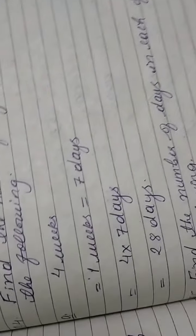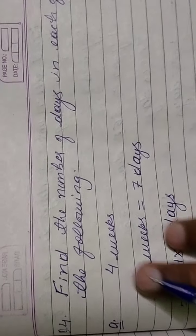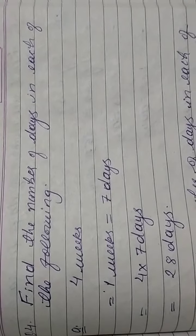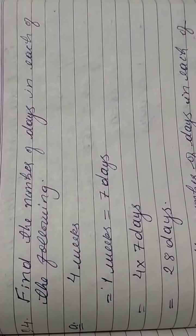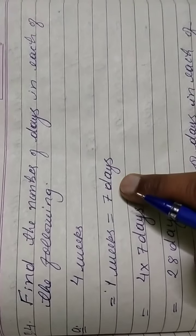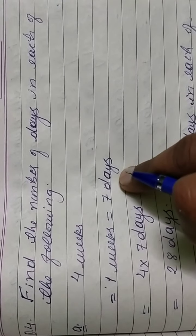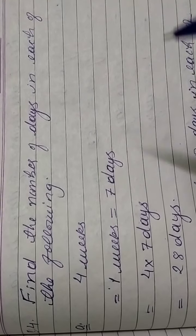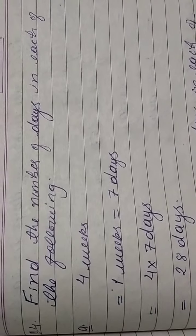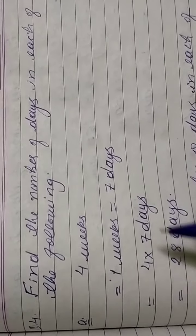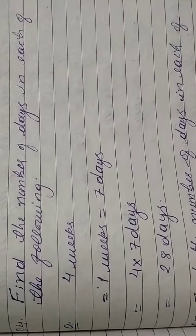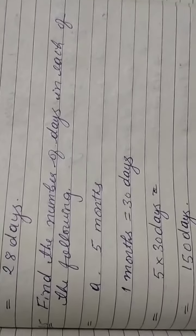Question number 4: Find the number of days in each of the following. He says 4 weeks. We know 1 week equals 7 days — Sunday, Monday, Tuesday, Wednesday, Thursday, Friday, Saturday — total 7 days. So we multiply 4 × 7 = 28 days.